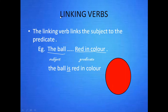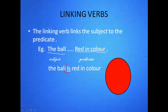Next is linking verbs. The linking verb links the subject to the predicate. For example: The ball red in color — is this sentence meaningful? No, it's not meaningful. Now if we add is to this sentence: The ball is red in color. This gives meaning to the sentence, and is is the linking verb.